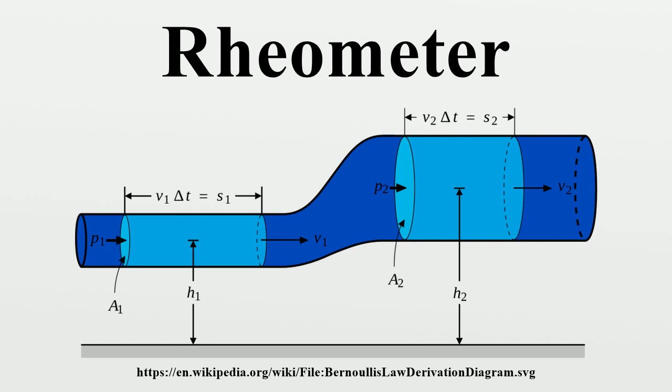Acoustic rheometers measure the sound speed and attenuation of ultrasound for a set of frequencies in the megahertz range. Sound speed is a measure of system elasticity. It can be converted into fluid compressibility. Attenuation is a measure of viscous properties.